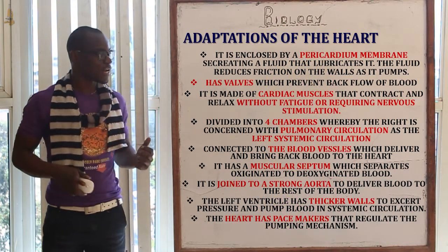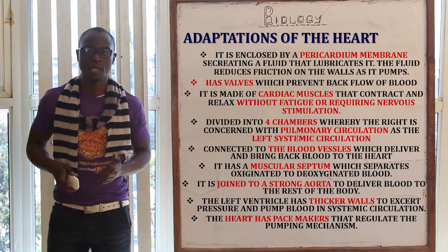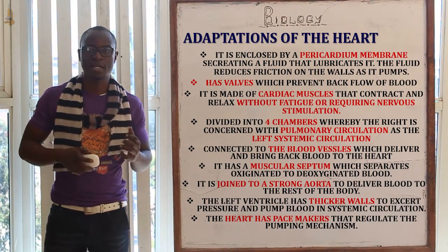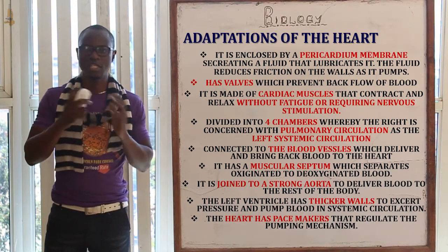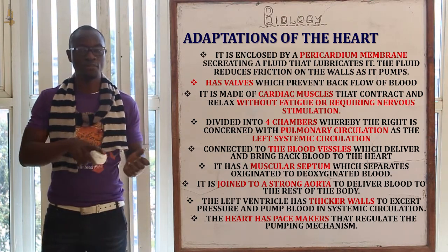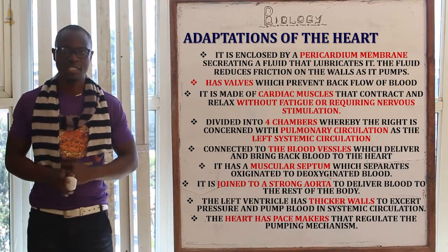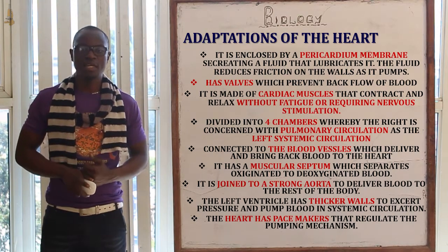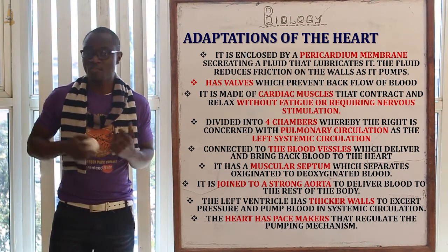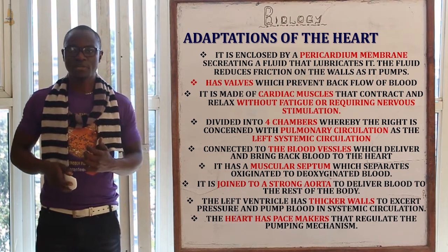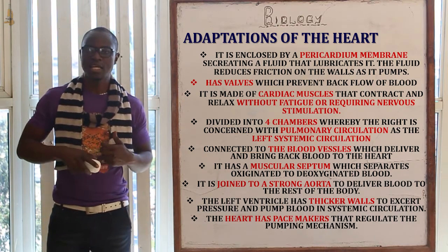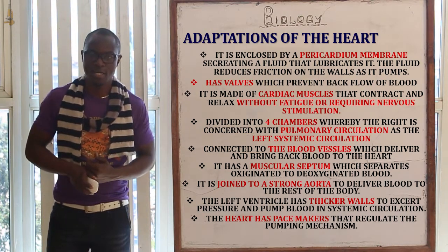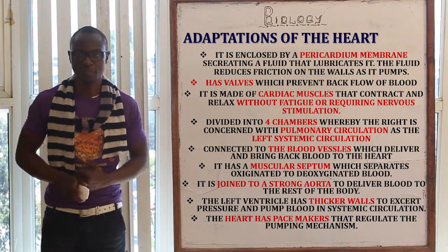The heart also has a very muscular septum which mainly separates the oxygenated blood from the deoxygenated blood. It is also joined by a very strong aorta that delivers blood to all parts of the body as another adaptation.